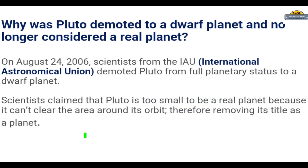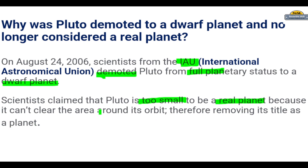Why was Pluto demoted to a dwarf planet and no longer considered a real planet? On August 24, 2006, scientists from the International Astronomical Union (IAU) demoted Pluto from full planetary status to a dwarf planet. The reason was that it was too small to be a real planet and it cannot clear the area around its orbit, therefore losing its title as a planet.